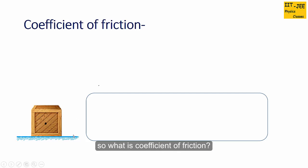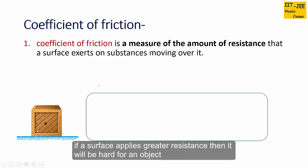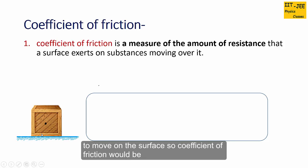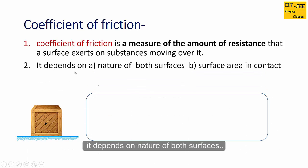So what is coefficient of friction? Coefficient of friction is a measure of the amount of resistance that a surface exerts on substances moving over it. If a surface applies greater resistance, it will be hard for an object to move on that surface, so the coefficient of friction would be greater for that kind of surface.